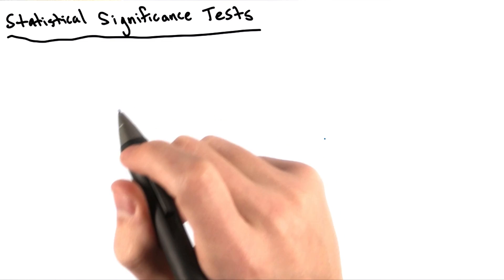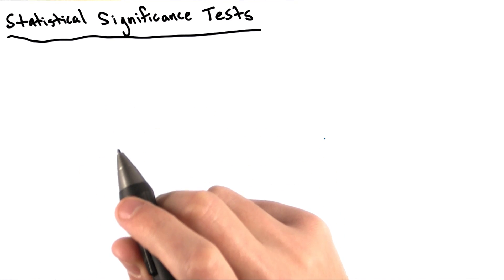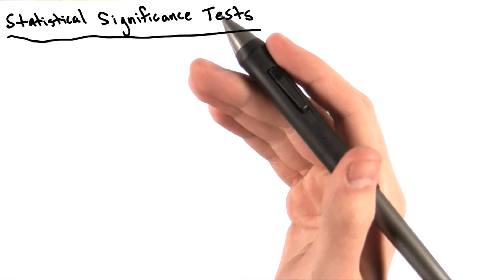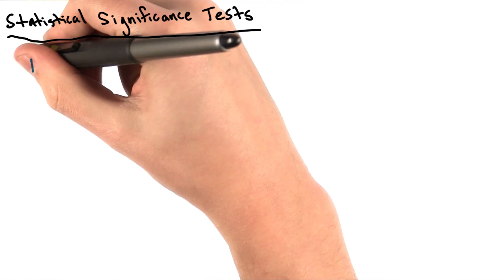Now that we've familiarized ourselves with the normal distribution, let's discuss one of the most common parametric tests that we might use to compare two sets of data, such as our samples of left-handed and right-handed MLB batters. That would be the t-test.